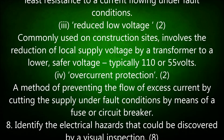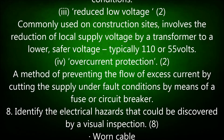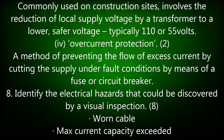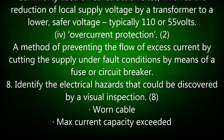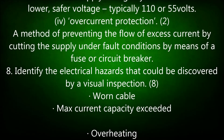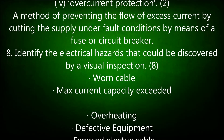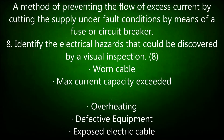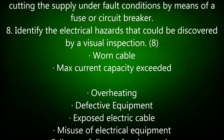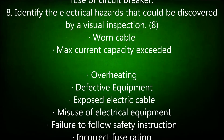Reduced low voltage: commonly used on construction sites, involves the reduction of local supply voltage by a transformer to a lower, safer voltage — typically 110 or 55 volts. Over-current protection: a method of preventing the flow of excess current by cutting the supply under fault conditions, by means of a fuse or circuit breaker.